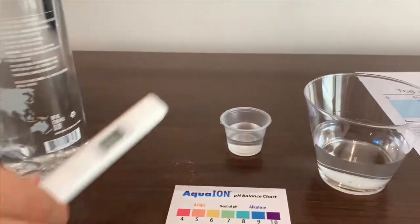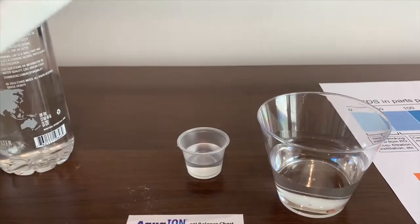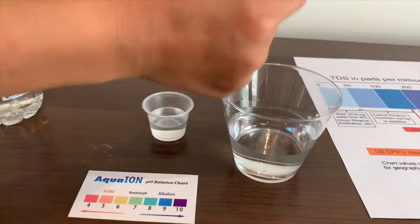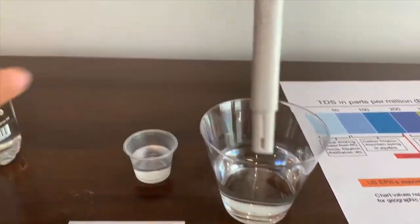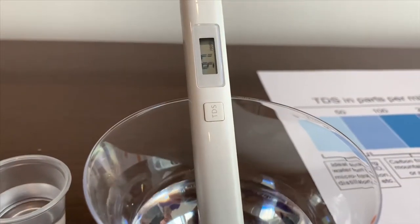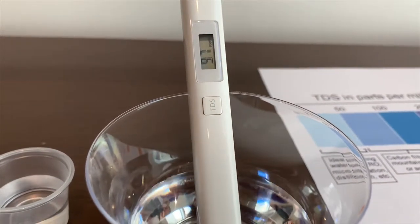Let's check the TDS level first. Turn the TDS meter on first. Make sure it says zero. Put it in. And let's switch. It's close to 97.